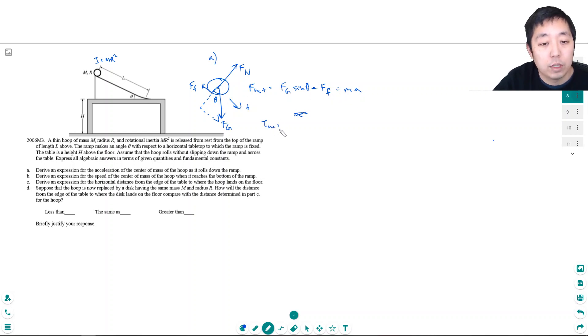Now I'm going to look at the net torque. The force of gravity acts at the center of the ring, so there's no torque because r would be zero. The normal force is parallel to the r vector, so that torque is zero. The torque from friction is r times the force of friction, which equals I alpha. I is mr squared alpha, and to relate a and alpha when rolling, a equals alpha r.